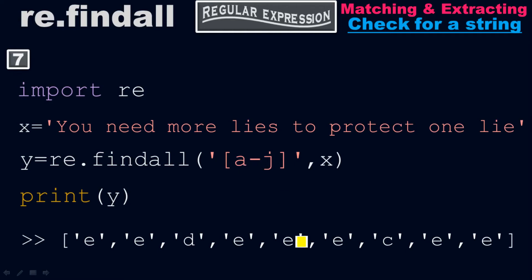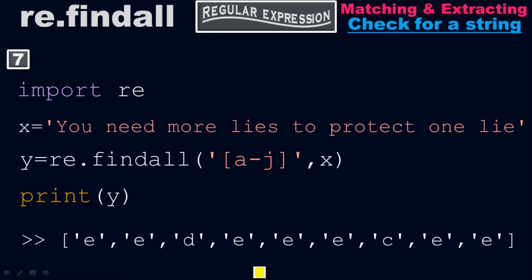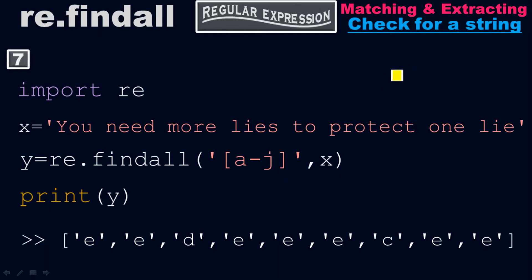Our range is from a to j, not from a to z. Whatever character comes within the range a to j will be printed in the output, but it must be in lowercase — not uppercase. The program will analyze the x string and print only those characters which lie in the range a to j in lowercase form. So we get: e, e, d, e, e, c, e, e. These are the only characters within that range.